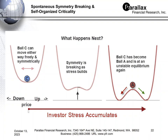Then investor stress starts to accumulate. People form opinions about the stock; some news or fundamental information comes out; the macro environment is changing and stress builds up. The stress is building and point C is moving upward. Eventually point C becomes point A — an unstable point where some people want to buy and some want to sell. We call this symmetry breaking.